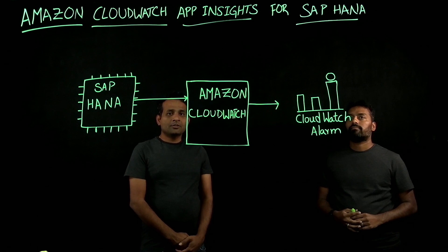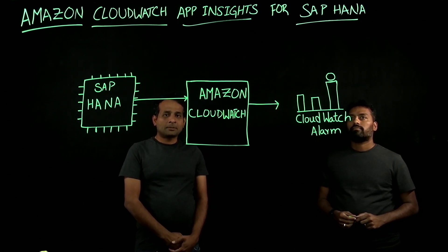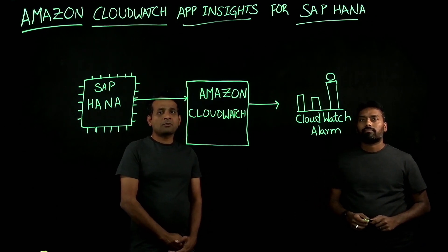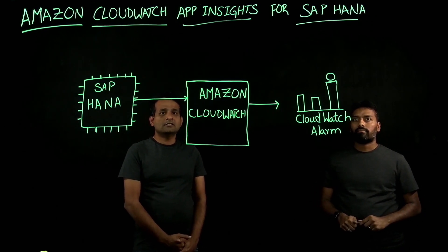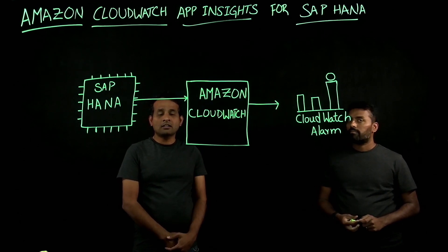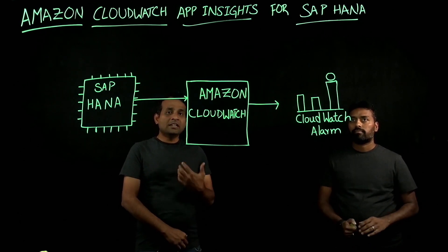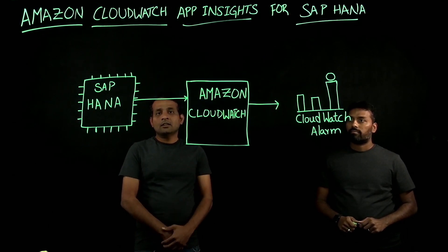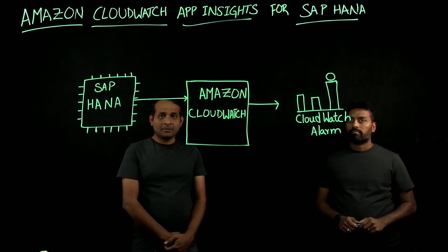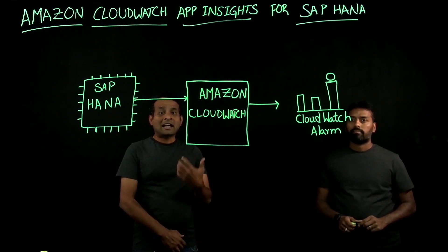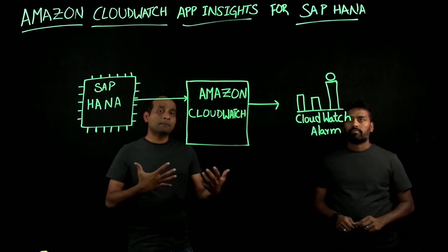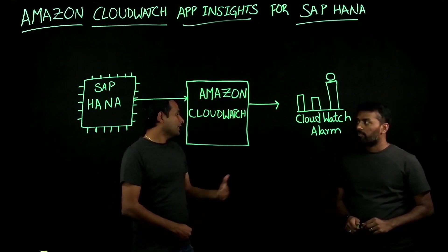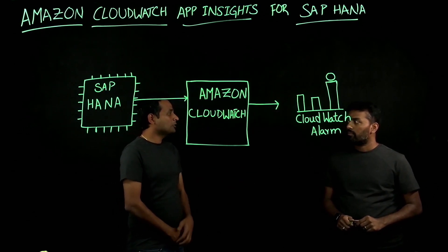Today we are here to discuss Amazon CloudWatch App Insights for SAP HANA Database. As many of you know, there are more than 5,000 SAP customers running their SAP workloads on AWS. It is very important for these customers to identify any potential issues on their SAP HANA database and act on them in a timely manner before they could become bigger problems. This is a challenge that many customers come across. Venkat, I would like to hear from you how this challenge can be addressed.